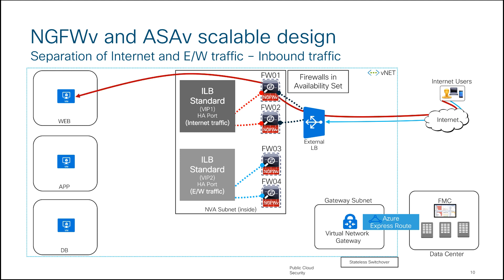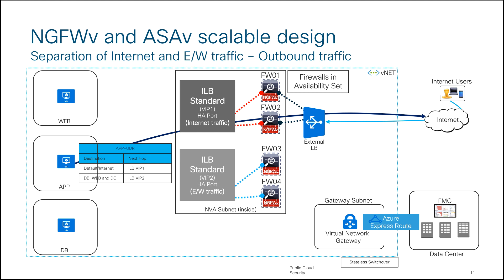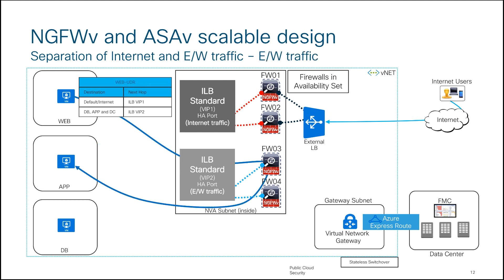For traffic flows in this segregated design: inbound traffic hits the external load balancer and goes to firewall one or two, with source translated to the egress interface for symmetry. Outbound traffic follows UDRs to virtual IP one, which points to firewall one or two, and from there reaches the internet. For east-west traffic, UDRs route to virtual IP two, sending traffic to firewall three or firewall four — a completely separate pair dedicated only to east-west traffic. This is how internet and east-west traffic are segregated.